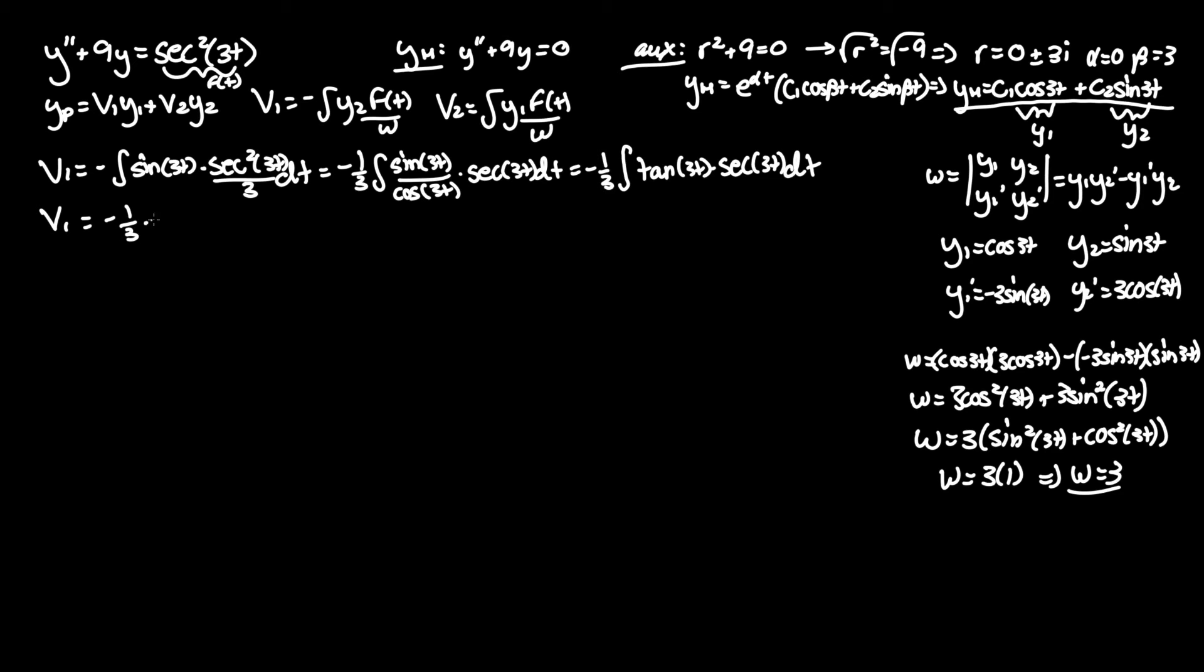v1 equals negative one third times one third, since there's an inner coefficient they have to bring as a denominator as well. And this would just be one third times secant of 3t. Therefore, v1 equals negative one ninth secant of 3t.